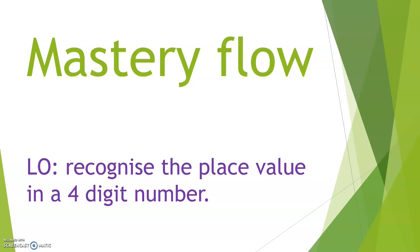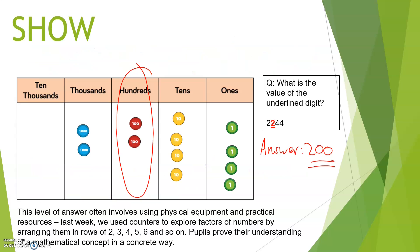Let's have a look at the mastery flow in action. The learning objective for this unit was to recognise the place value in a four-digit number. The first thing the children will do is the representation, or as we call it in class, the 'show'. As you can see, in order to find the value of the underlying digits, the children use a place value grid, put the counters down to build the number, and then found the correct place value by counting the counters. This gives them a solid concrete understanding of what place value means.